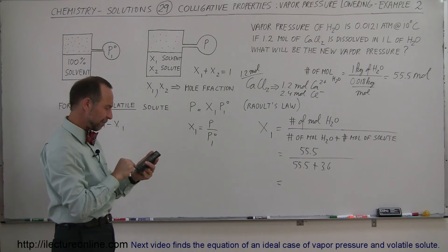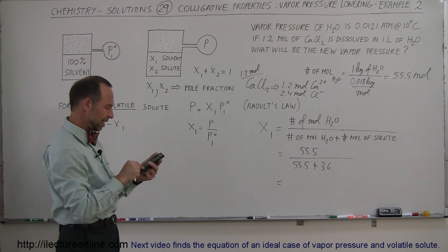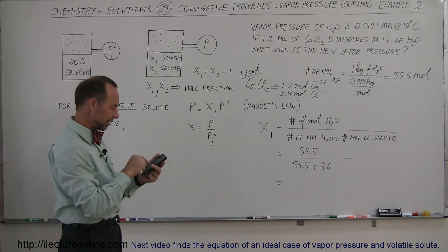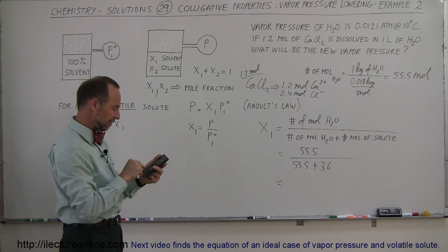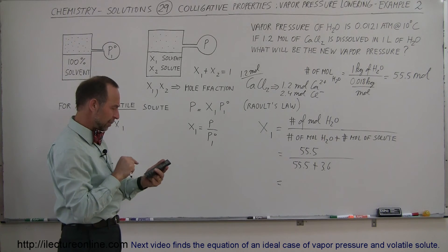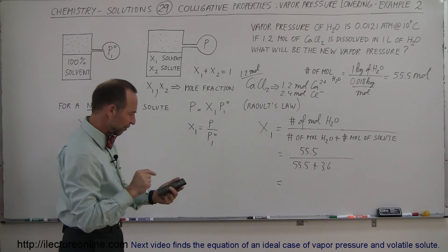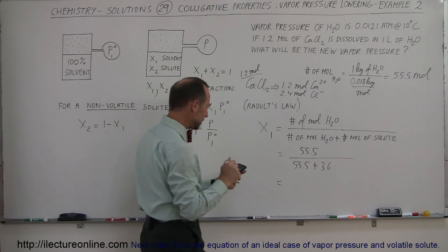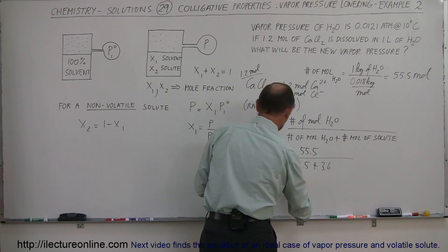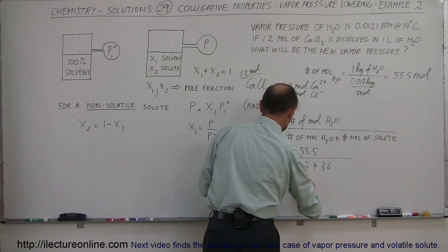So 55.5 divided by the quantity 55.5 plus 3.6 equals a mole fraction of 0.939. Now we have the mole fraction of the solvent water in the solution.